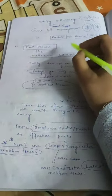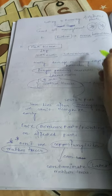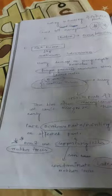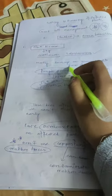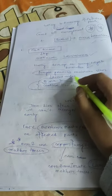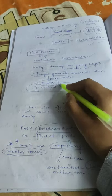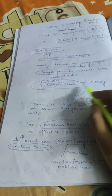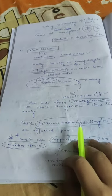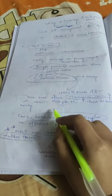Pink disease of rubber is caused by Corticium salmonicolor. This disease mostly damages young twigs and branches. Fungal growth encircles the stem and penetrates the bark and cortical tissues, leading to bark decay. The bark then splits and peels off, and the tree dies after the rainy season.